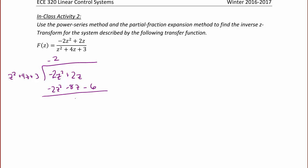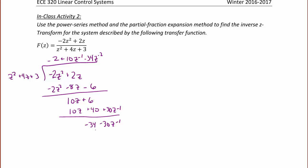When I subtract I'm going to have 10Z plus 6. So my next term is going to be plus 10Z to the negative 1, and when I multiply I get 10Z plus 40 plus 30Z to the negative 1. For the third term, when I subtract I get negative 34 minus 30Z to the negative 1. So here I'm going to have negative 34Z to the negative 2, giving negative 34 minus 136Z to the negative 1.